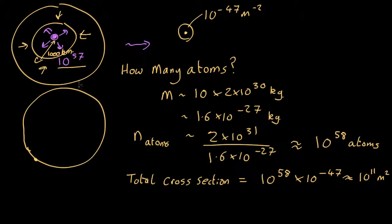But what's the total area of the shell? Area of a sphere is 4 pi r squared. So in this case it's 4 pi times a thousand kilometers. So that's 10 to the 6 meters, a thousand kilometers times a thousand meters. 10 to the 6 squared, which is roughly 10 to the 13 square meters.